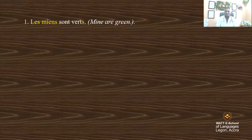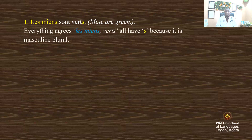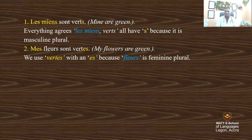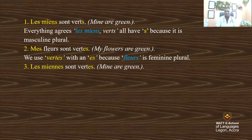'Les miens sont verts' — the possessive pronoun 'les miens' replaces 'mes stylos'. Everything agrees — les miens, verts — all have S because it is masculine plural. 'Mes fleurs sont vertes' — my flowers are green. We use 'vertes' with ES because flower is feminine plural. 'Les miennes sont vertes' — mine are green. We use 'les miennes' because flower is feminine plural.